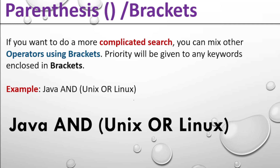Next is parentheses or brackets. If you want to do a more complicated search, you can mix other operators using brackets. Priority will be given to any keyword enclosed in the brackets. If you want to use multiple operators, use brackets. Example: Java AND (Unix OR Linux) — here you will find Java, and from Unix or Linux, you will get one keyword based on this operator.